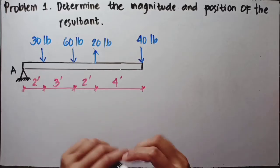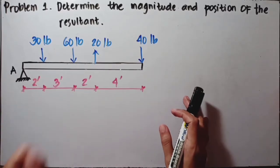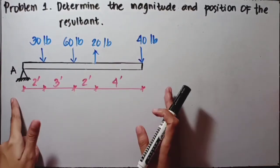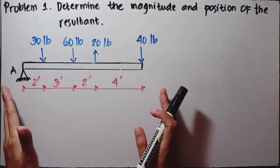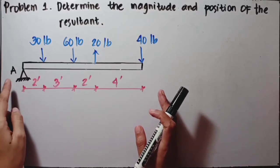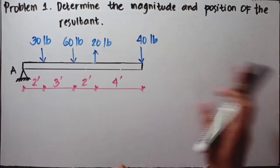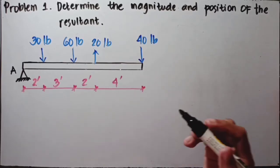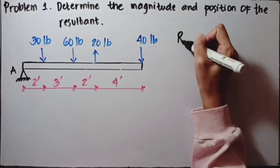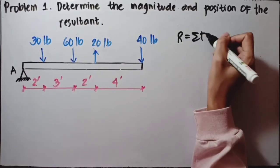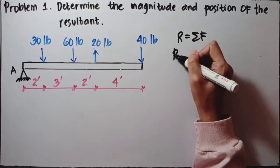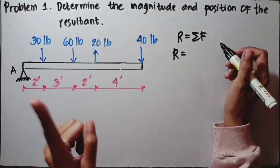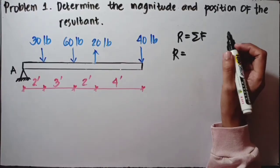Let's apply all those formulas to Problem 1, where we find the magnitude and position of the resultant. We have an overhang figure with a support at one end — a hinge — and unsupported at the other end. To find the magnitude, we use the formula R equals the summation of forces. We add all the forces, being mindful of the sign of each force.